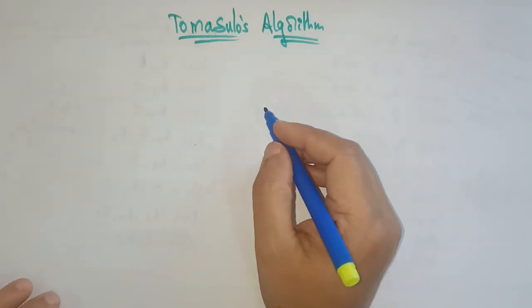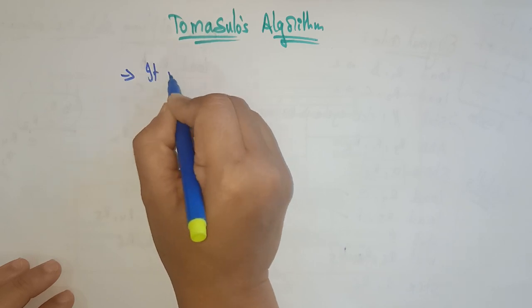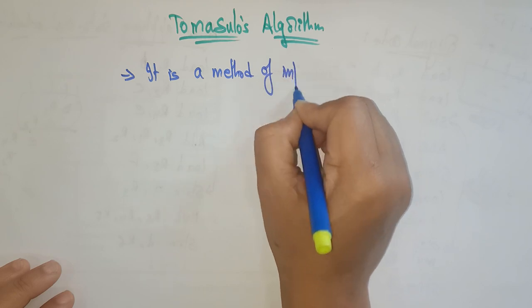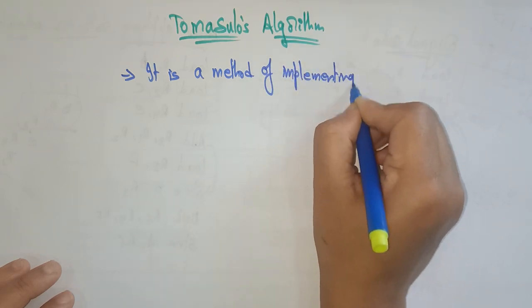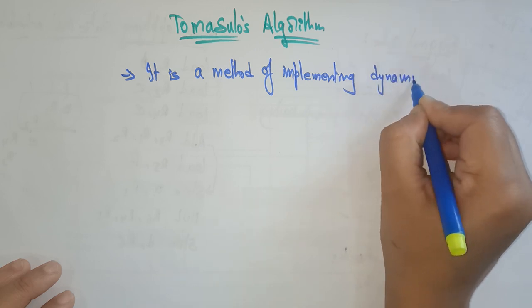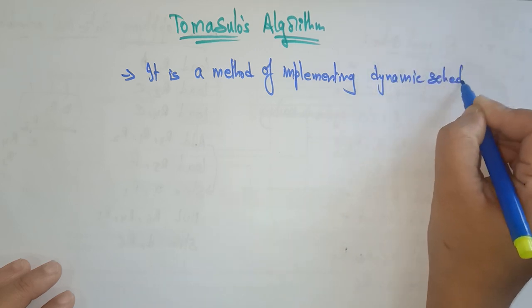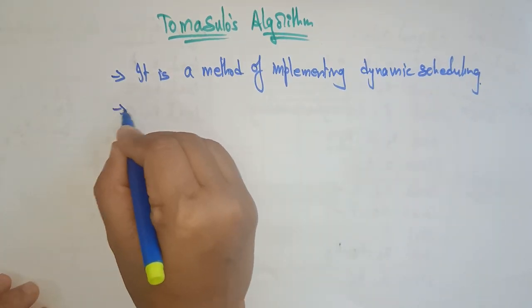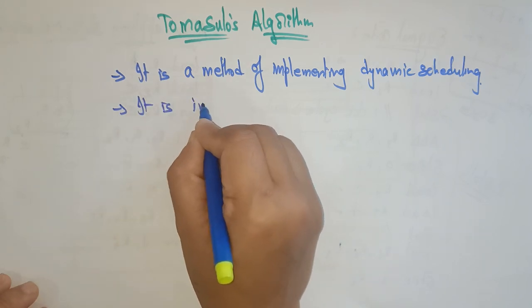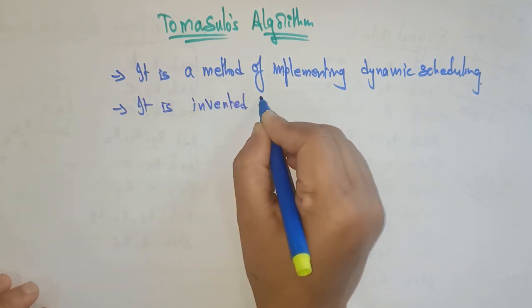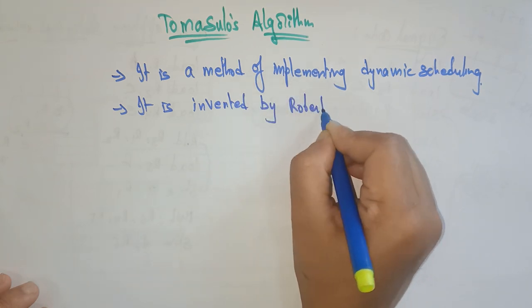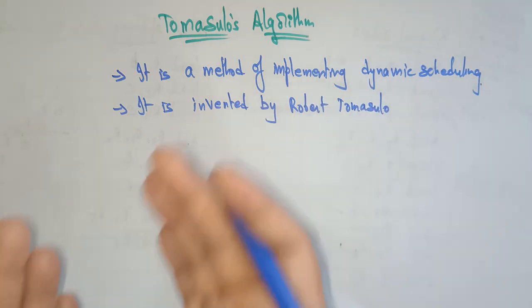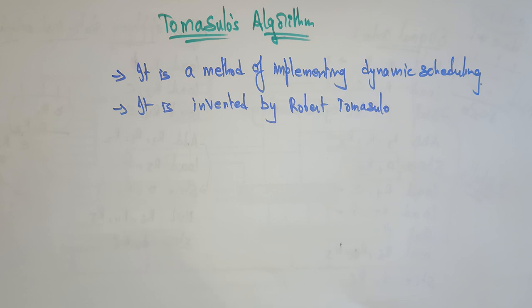Tomasulo's algorithm is a method of implementing dynamic scheduling. You have to remember that it is a method of implementing dynamic scheduling, and it was invented by Robert Tomasulo — that is why this algorithm is called Tomasulo's algorithm.